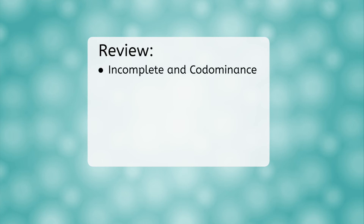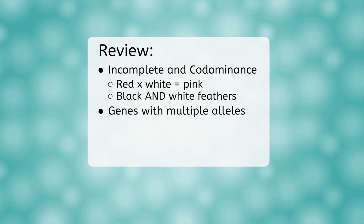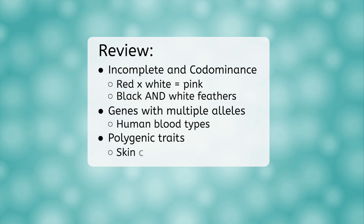During our lesson today, we looked at examples of incomplete and co-dominance, where the trait of the heterozygous genotype is different from either of the homozygous genotypes — it might be somewhere in the middle, like pink resulting from red and white, or a combination of both, like having black and white feathers. We also saw examples of genes with more than two possible alleles, like the human blood types. And we looked at polygenic traits, like skin color, that are controlled by multiple genes.